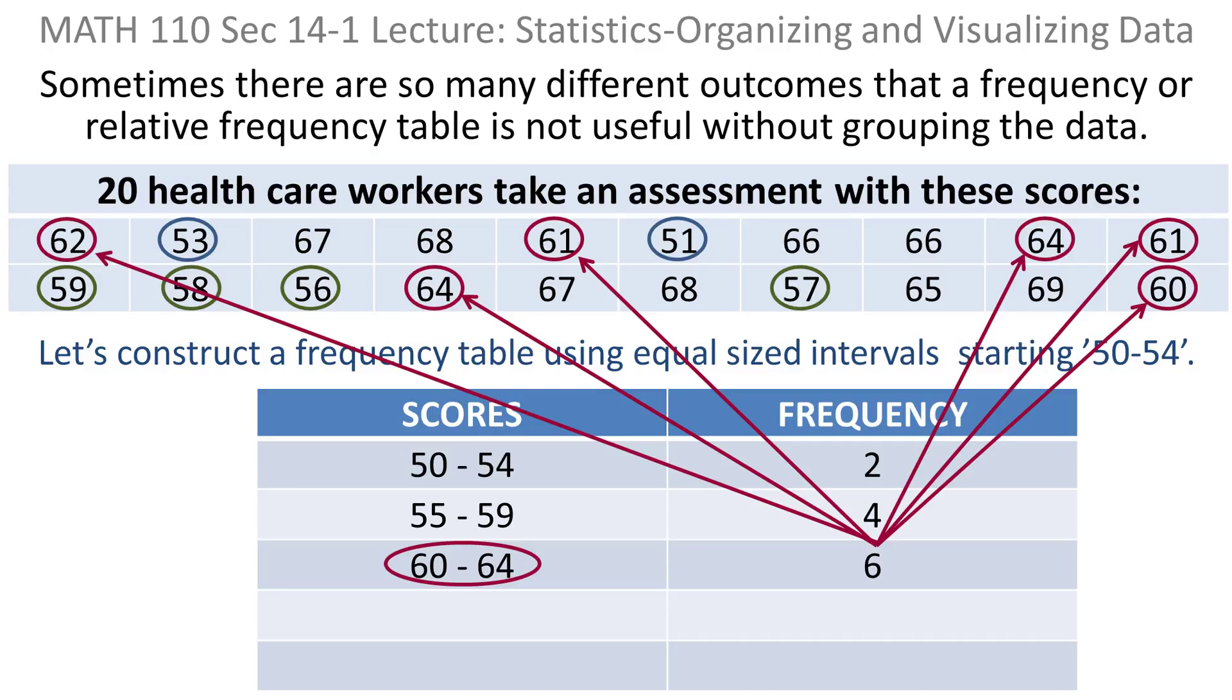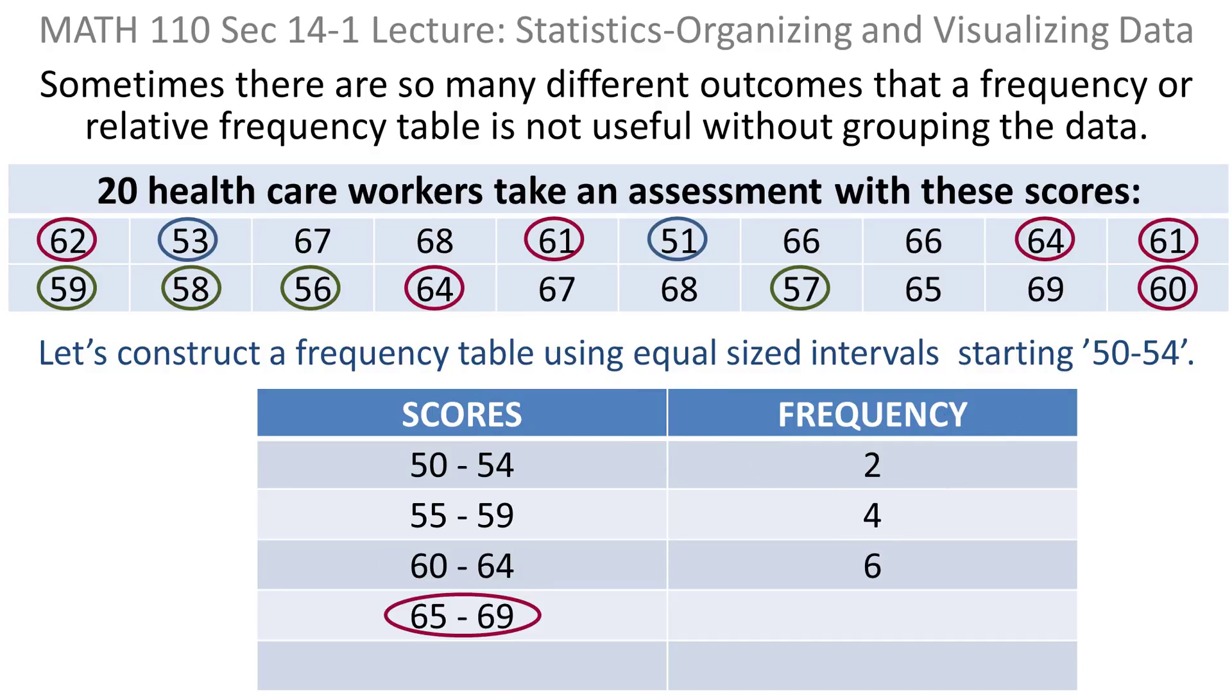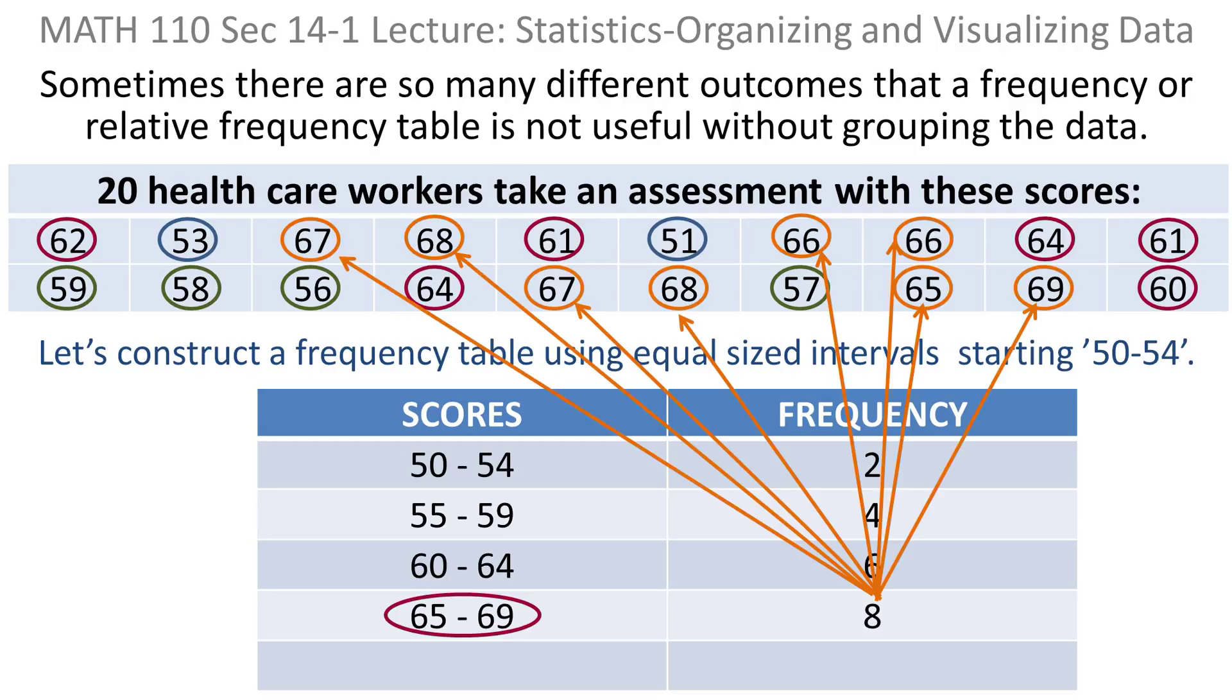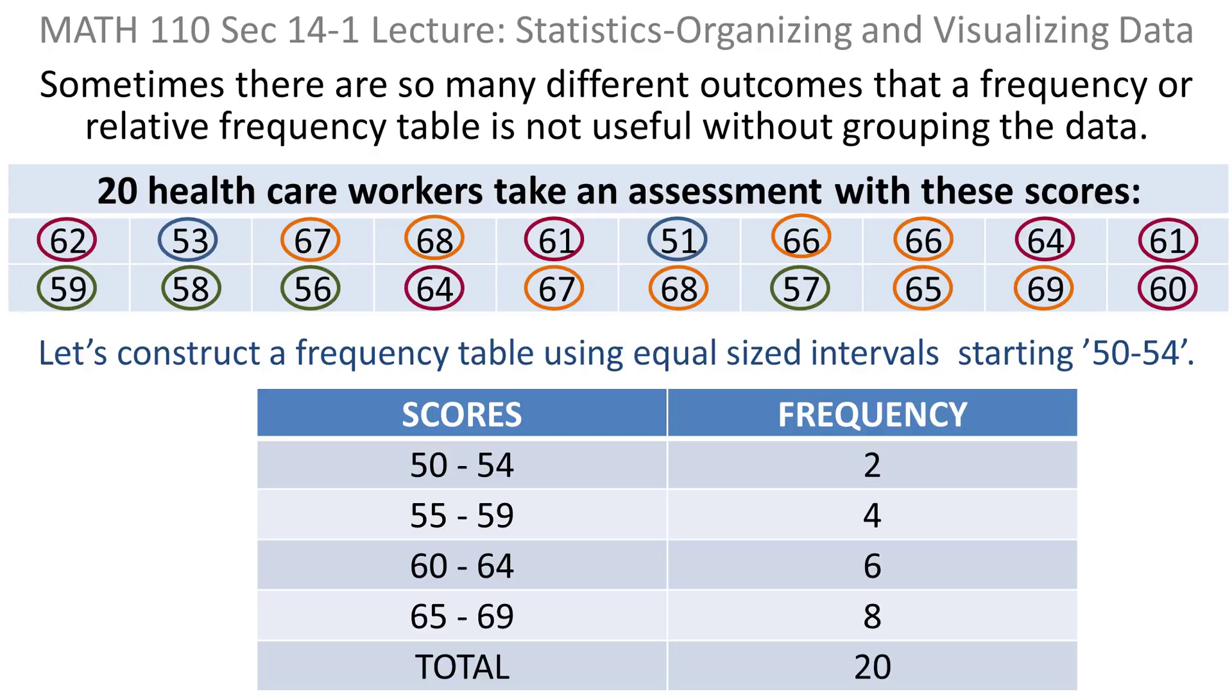Then I move to the next interval, 60 to 64. There are six of those. The next interval, 65 to 69, has eight. Finally, I can add them up and make sure I have all 20. So we've taken the raw data and grouped them so that we can deal with a much larger set of data in a more manageable form.